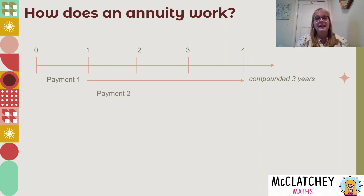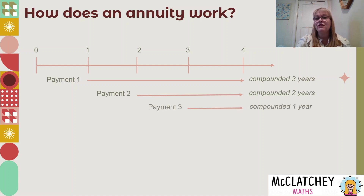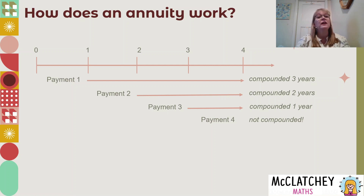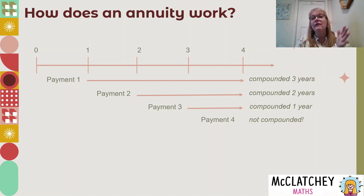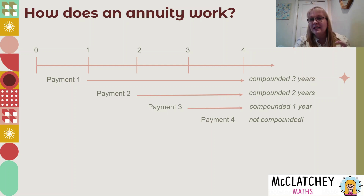That means the first payment, even though it's gone in during year one, is only going to attract three years of compound interest. Payment two goes in during the second year and attracts two years of compound interest. Payment three goes in during the third year and attracts one year of compound interest. The final payment is treated as going in on the very last day, so it does not get compounded at all.